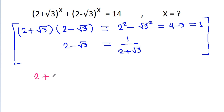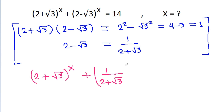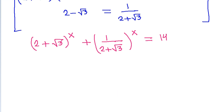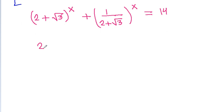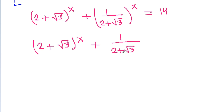So the equation becomes (2 + √3)^x plus 1/(2 + √3)^x, which is the same as (2 - √3)^x plus 1/(2 + √3)^x, is equal to 14.